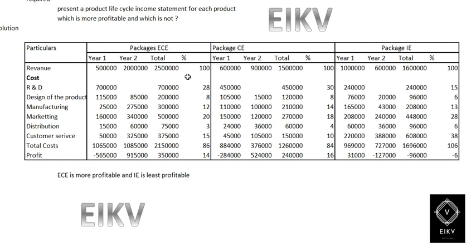I have divided each amount by the sales. For example, for the BCE package, we have a sales turnover of 25 lakhs. So 25 lakhs divided by 25 lakhs gives 100%. After that, we have R&D cost of 7 lakhs, and 7 lakhs divided by 25 lakhs gives 28%.